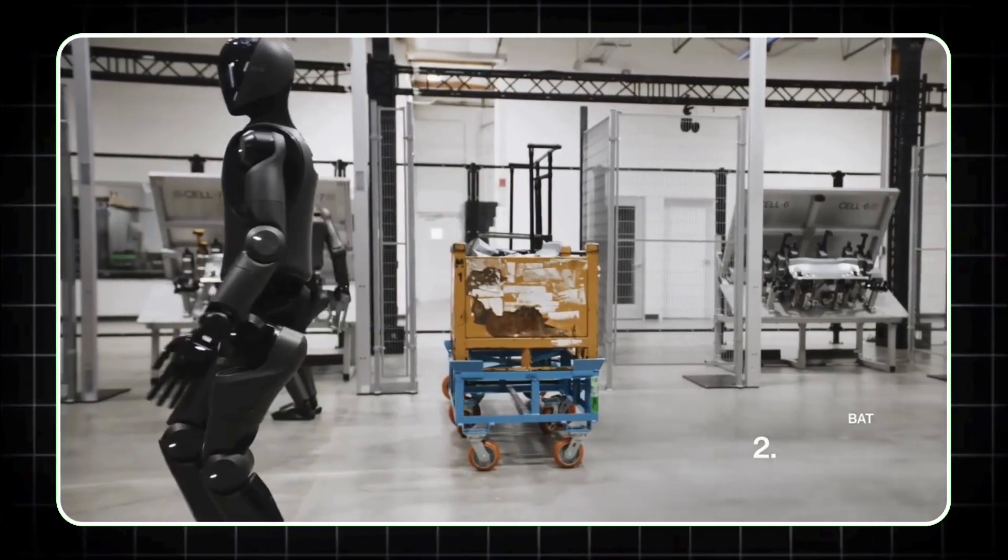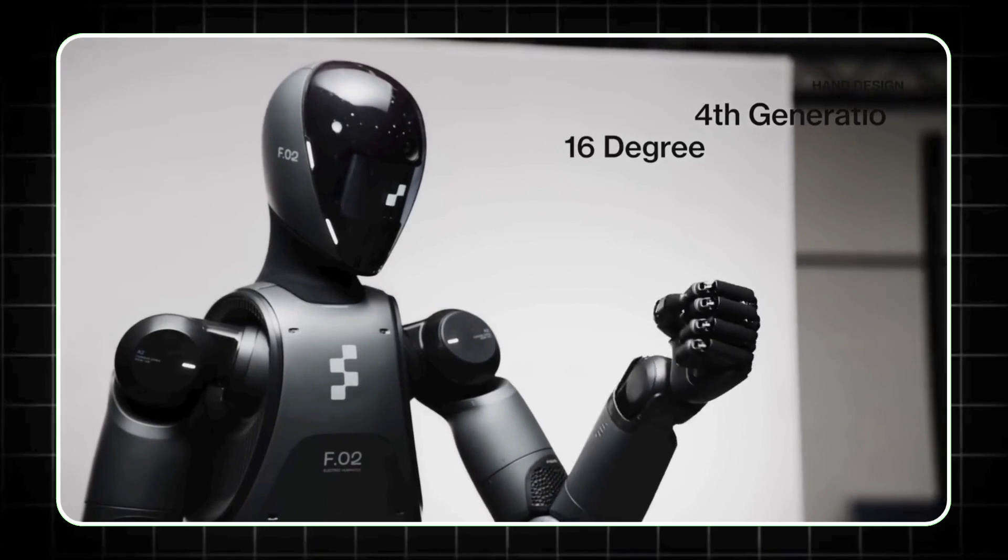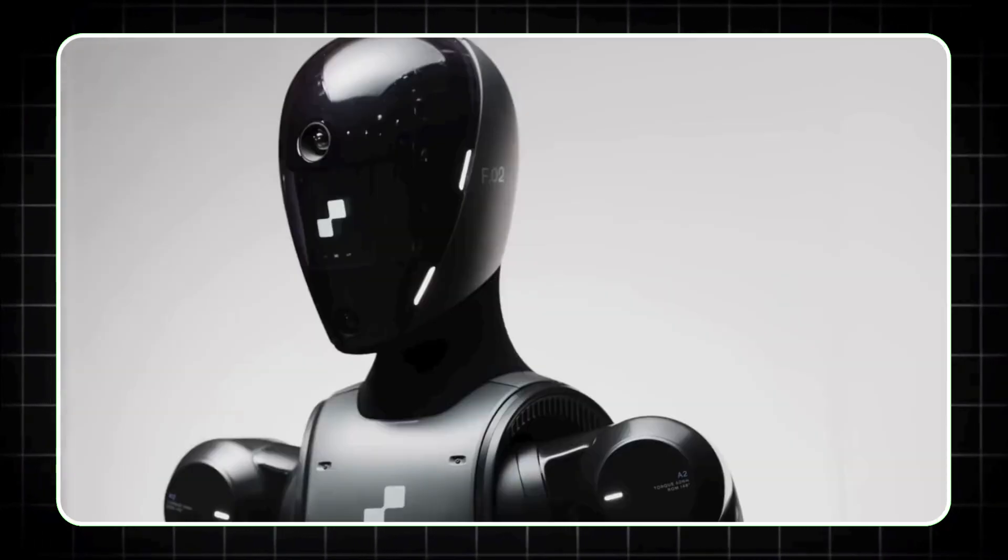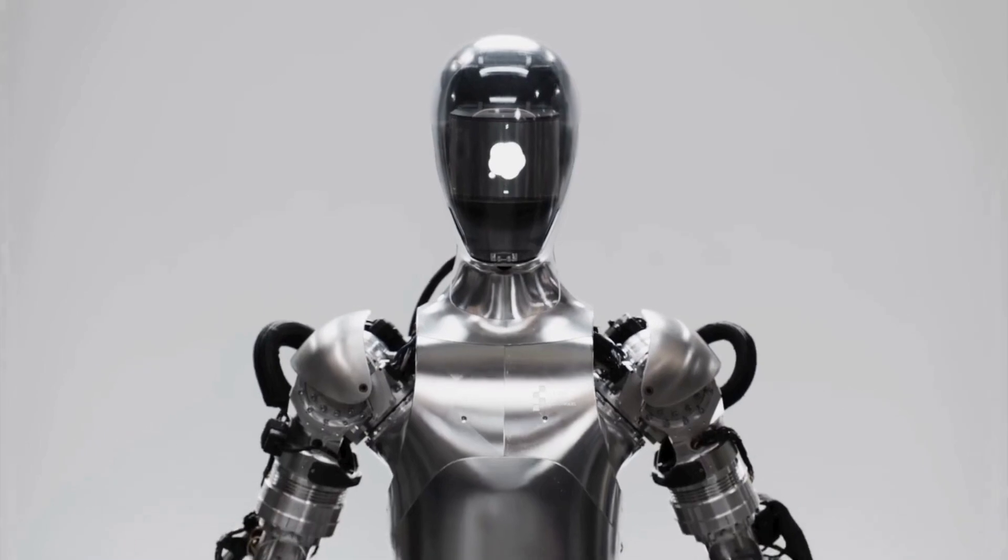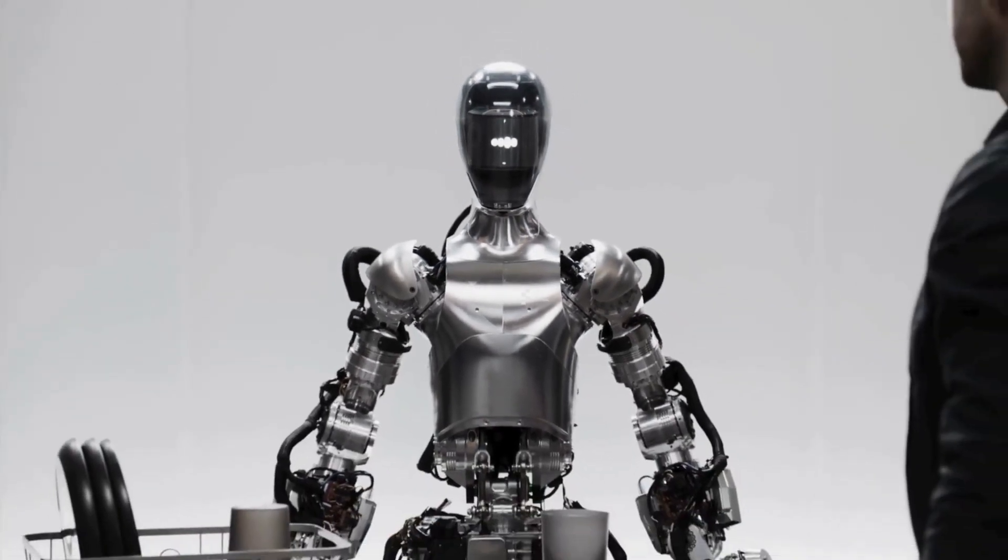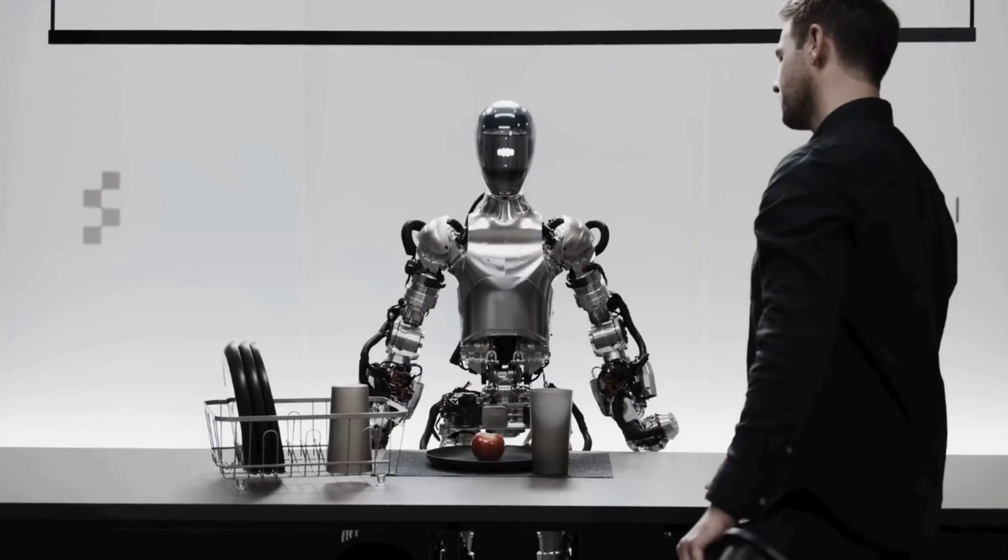But it's not just about brains. Figure 2 is equipped with humanoid hands that have 16 degrees of freedom, enabling it to perform intricate tasks like lifting objects weighing up to 44 pounds. Whether it's assembling products in a factory or assisting in logistics, Figure 2 is designed for versatility and efficiency.